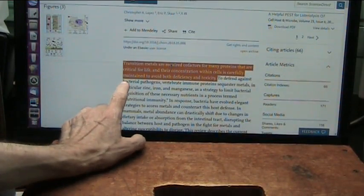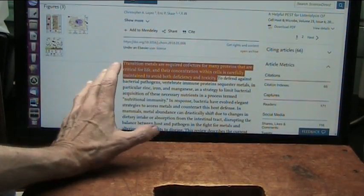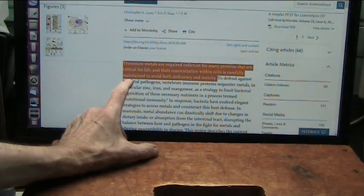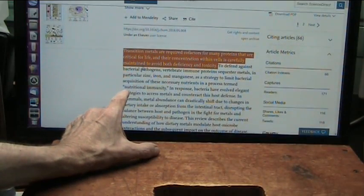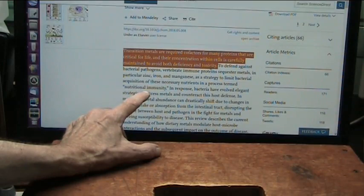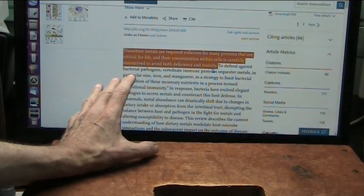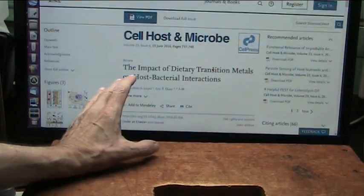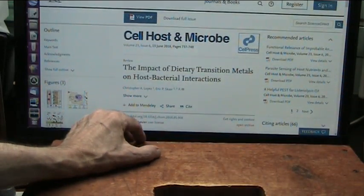Transition metals are required cofactors. You need them to work with other things. For many proteins that are critical for life and their concentration within the cells is carefully maintained to avoid both deficiency and toxicity. And the things that maintain them are the bacteria.